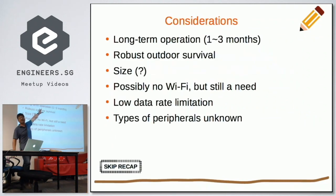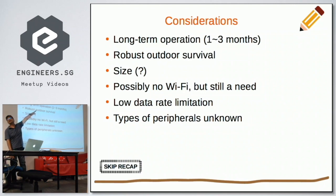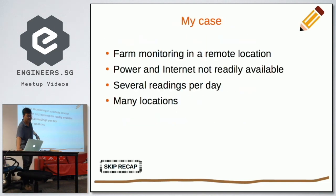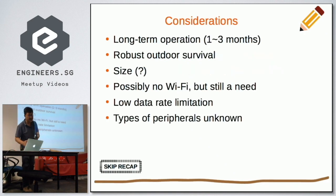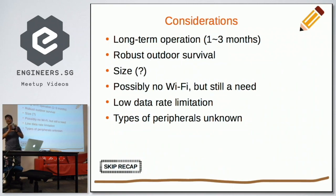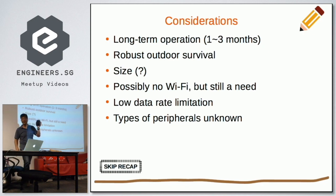For my case, why I started experimenting with NB-IoT is because a friend of mine who owns a prawn farm in Malaysia wants to test this technique first in Singapore. He asked me to design some hardware. He wants to do farm monitoring in a remote location where power and internet are not readily available. He wants to take several readings per day in many locations. He's given me a suitable enclosure to start working with — this is IP67, waterproof, rainproof, weatherproof.